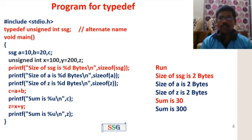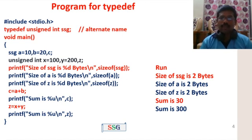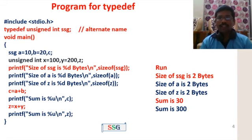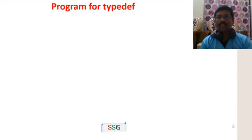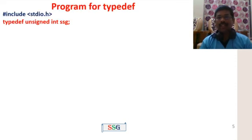Using the type definition keyword, you specify an existing name and then a new alternate name. Using the alternate name instead of the existing name avoids mistakes. Do not mix up the existing name with the alternate name.